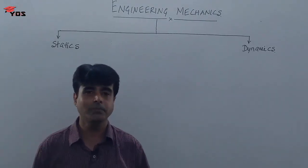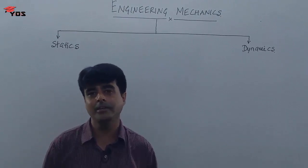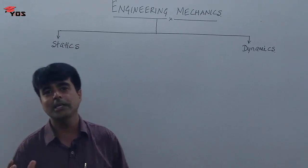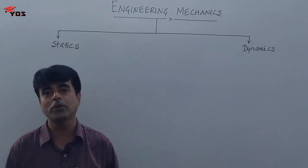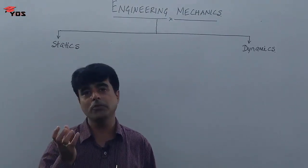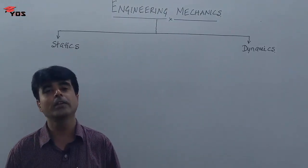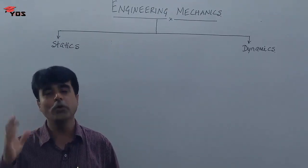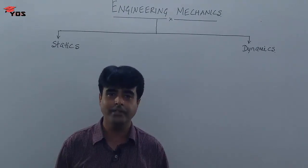If you take mechanical or automobile engineering, their main work is to design a machine. If you take a shaft, it is mainly used for transmission of power. That transmission of power is because of the torque acting on it, and to calculate torque you need the tangential force — all of that uses basic principles of engineering mechanics.